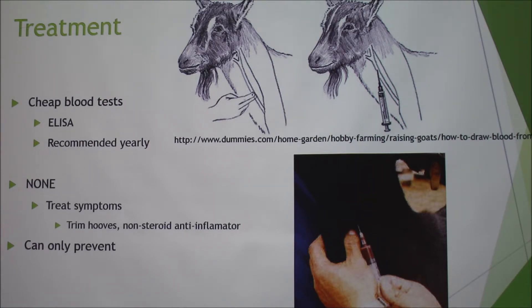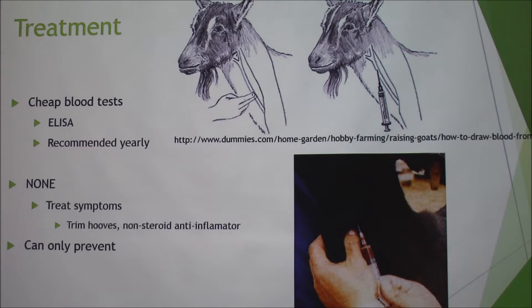So even though an animal tests negative the first year, the next year — even though it has been isolated from all other CAE-positive animals — it can possibly show positive.